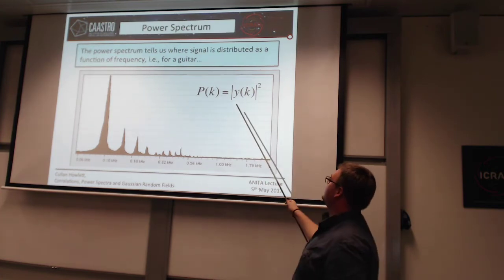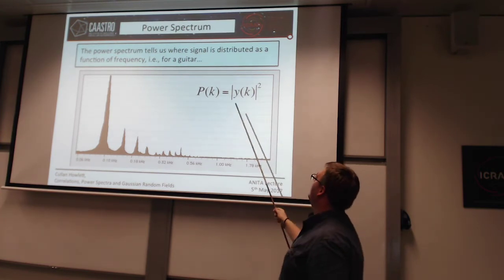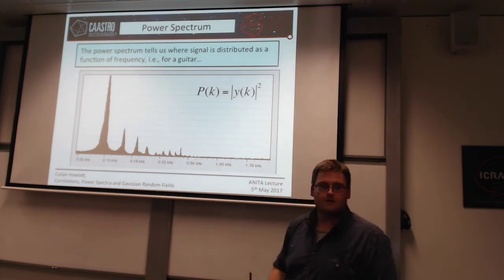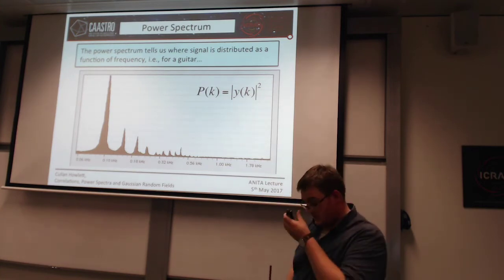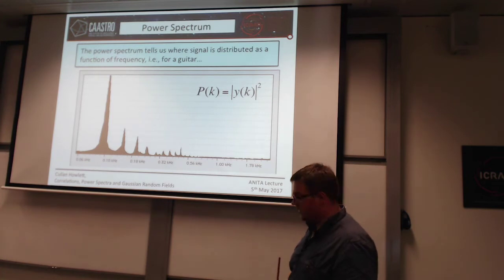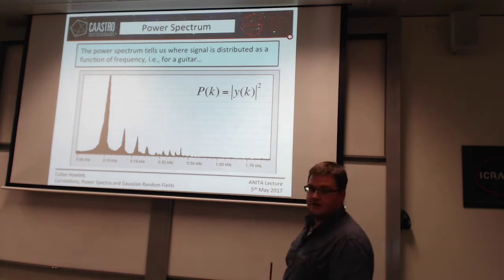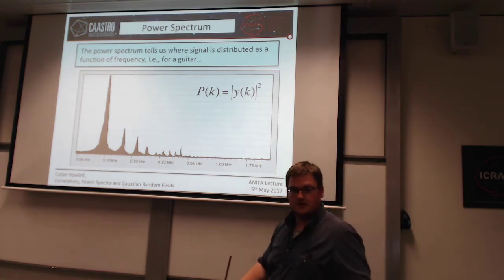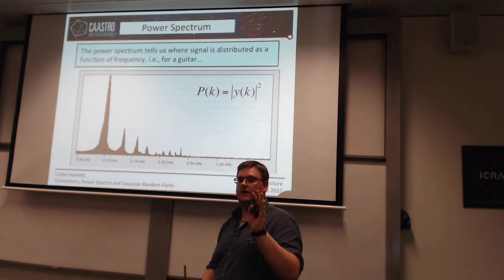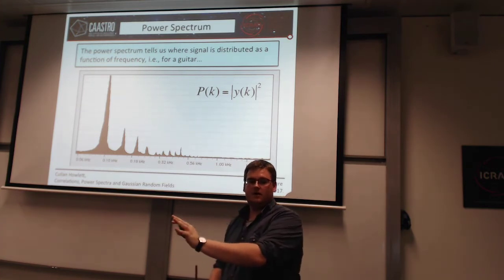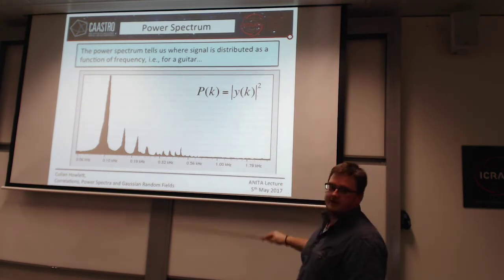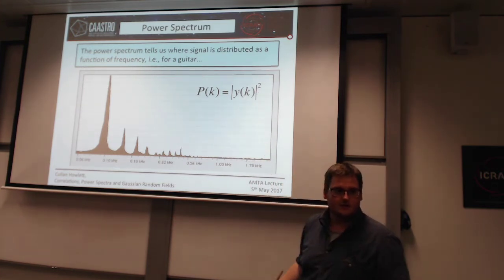For a field, this is nothing more than the amplitude of those Fourier modes. As you may remember from the previous lecture, you can take a field, Fourier transform it, get real and complex parts, then square the real parts and the complex parts together — and that is your power spectrum.